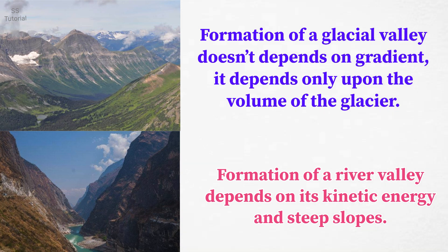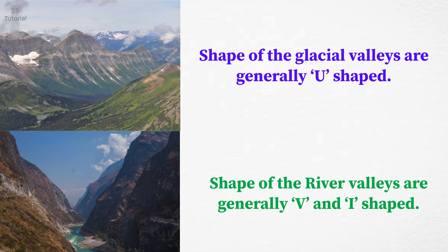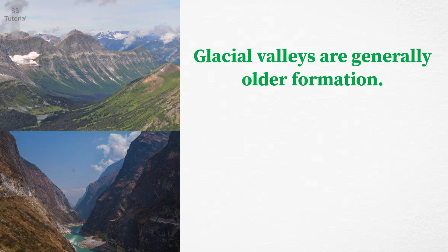Higher the gradient, higher the kinetic energy, creating a deep and narrow valley. The shape of glacial valleys is usually U-shaped, whereas the shape of river valleys is generally V or I-shaped.